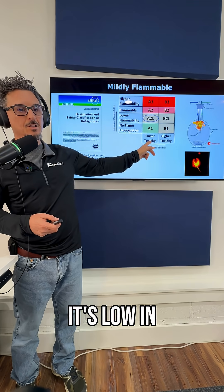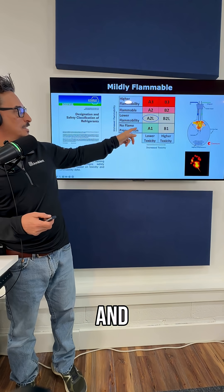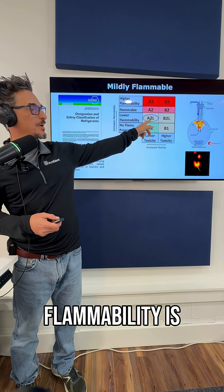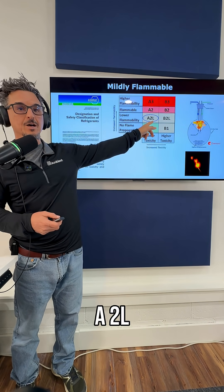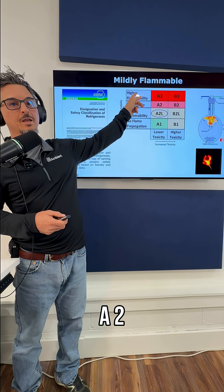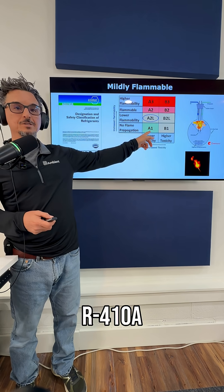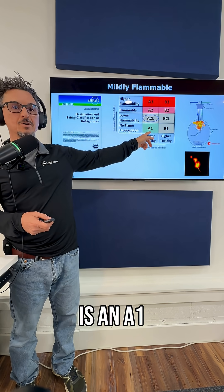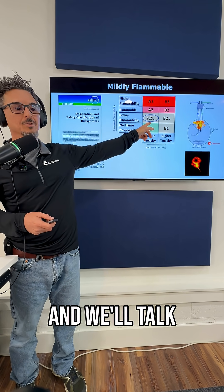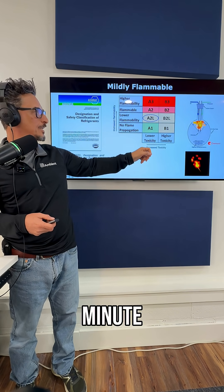When you see A, it's low toxicity; B is high. No flame propagation is a 1, lower flammability is a 2L, flammable is a 2, and high flammability is an A3. R410A is an A1 refrigerant, so now we're moving up to an A2L, and we'll talk about why that's a big deal in a minute.